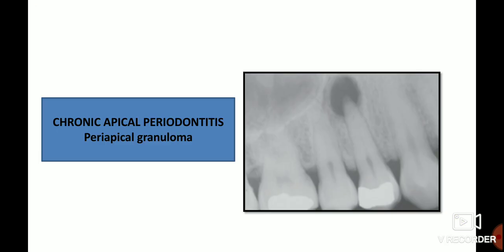Now let's discuss another intraoral periapical radiograph showing chronic apical periodontitis, which can also be called periapical granuloma. It is only a radiographic diagnosis and never a clinical diagnosis, because it can be identified only based on the radiographic size of the periapical lesion.